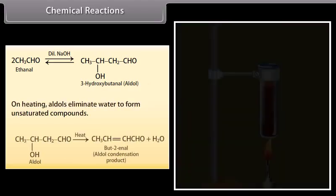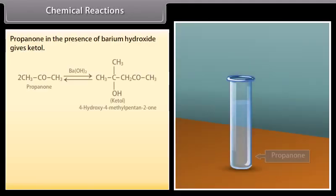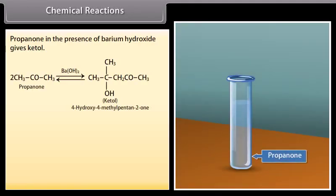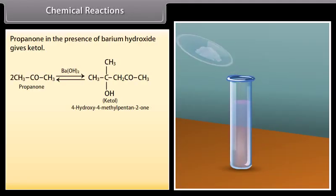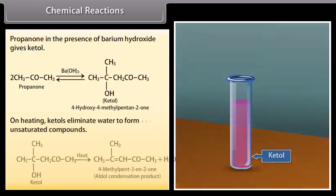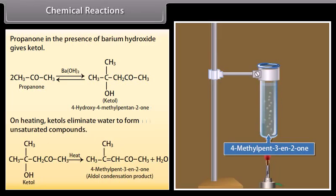On heating, aldols eliminate water to form unsaturated compounds. Propanone in the presence of barium hydroxide gives ketol. On heating, ketols eliminate water to form unsaturated compounds.